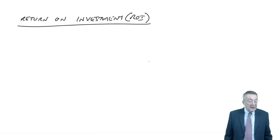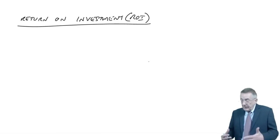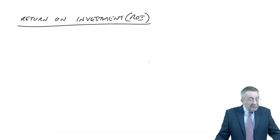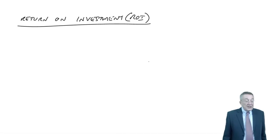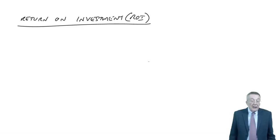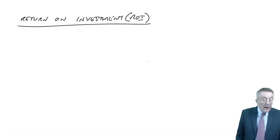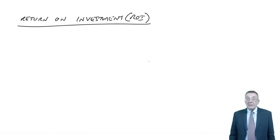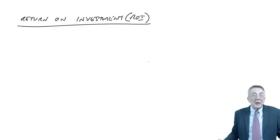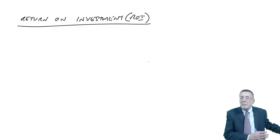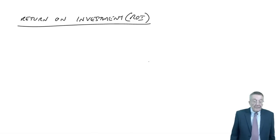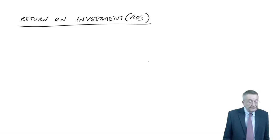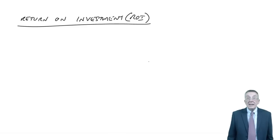Let me show you with a simple example. Example one: Alcania PLC has divisions throughout the Baltic states. The Venspels division is currently making a profit of £82,000 on investment of £500,000. Alcania has a target return of 15% — perhaps that's what we're currently earning overall. The manager of Venspels is considering a new investment requiring additional investment of £100,000, which will generate additional profit of £17,000 a year. We're asked to do two things.